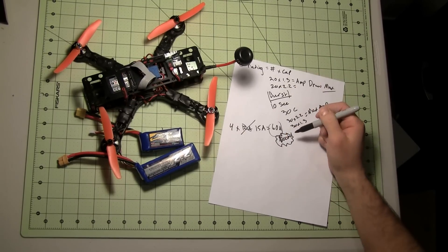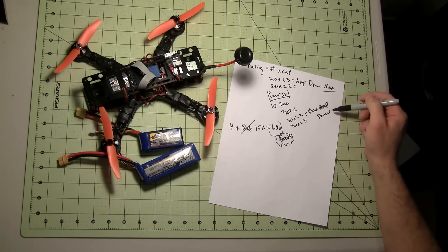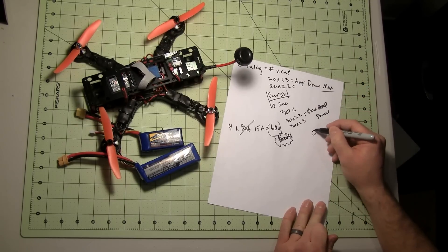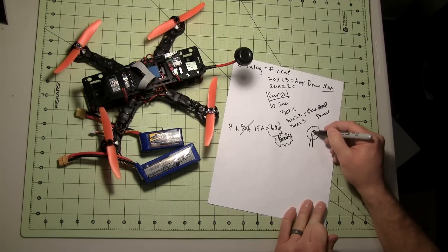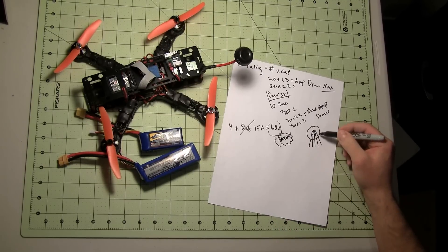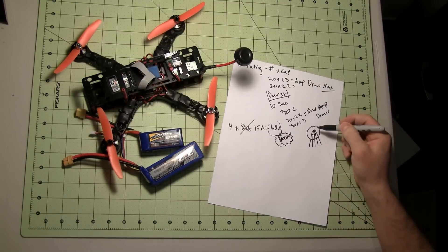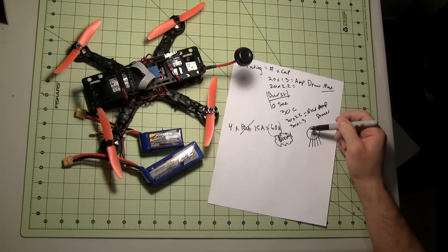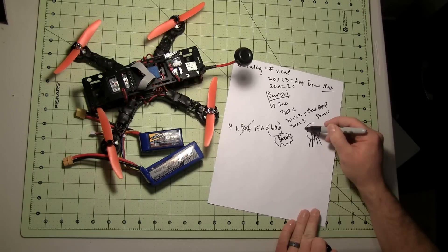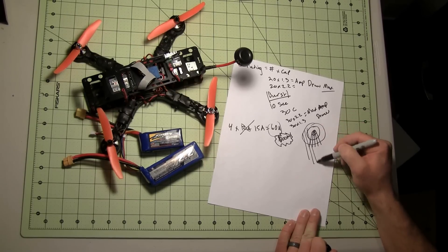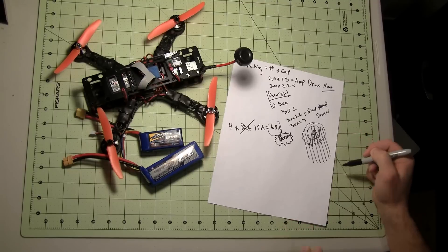So what is the C rating? As I said, that's the max amp draw. You can also think of it as the pipe. How much energy can come through that little tiny battery plug to feed the amount of amps that your ESCs are going to be wanting? The bigger the C rating, the bigger the amount of energy that can flow through.